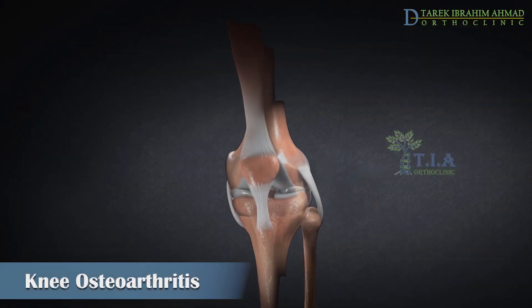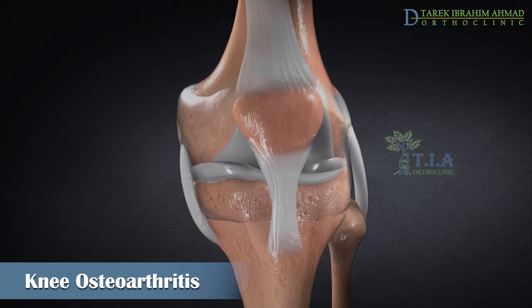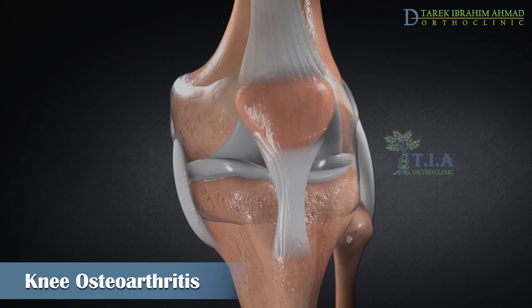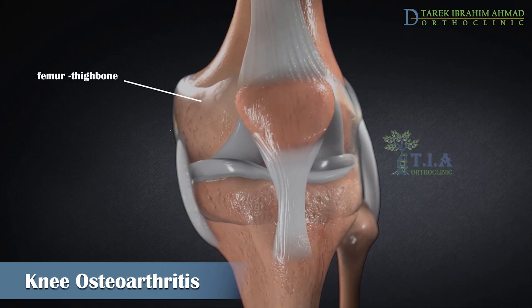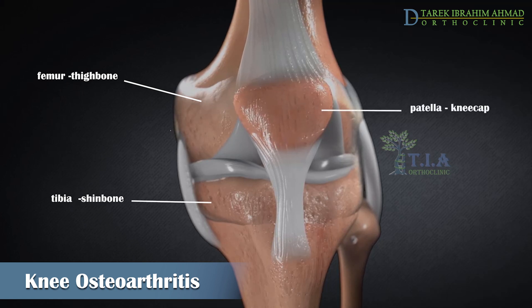The knee is the largest and strongest joint in your body. It is made up of the lower end of the femur, the thigh bone, the upper end of the tibia, the shin bone, and the patella, or kneecap.